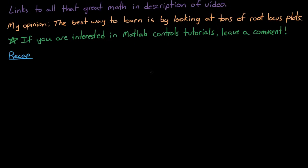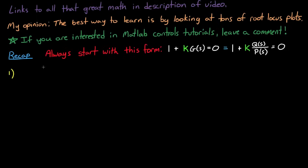Alright, now let me do a real quick recap of the first four rules. Remember that the first thing you need to do is rearrange your closed-loop characteristic equation into this form, where the ratio of q of s and p of s is the open-loop transfer function, g of s.